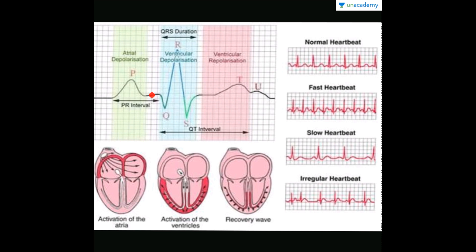To conclude, ECG is a diagnostic purpose test for the diagnosis of heart or cardiac diseases. It has a P wave, Q wave, R wave, and S wave — collectively known as the QRS complex — and there is a T wave and sometimes a U wave. Variations in this particular sequence or in the amplitude of these waves indicate a disease condition of the heart.